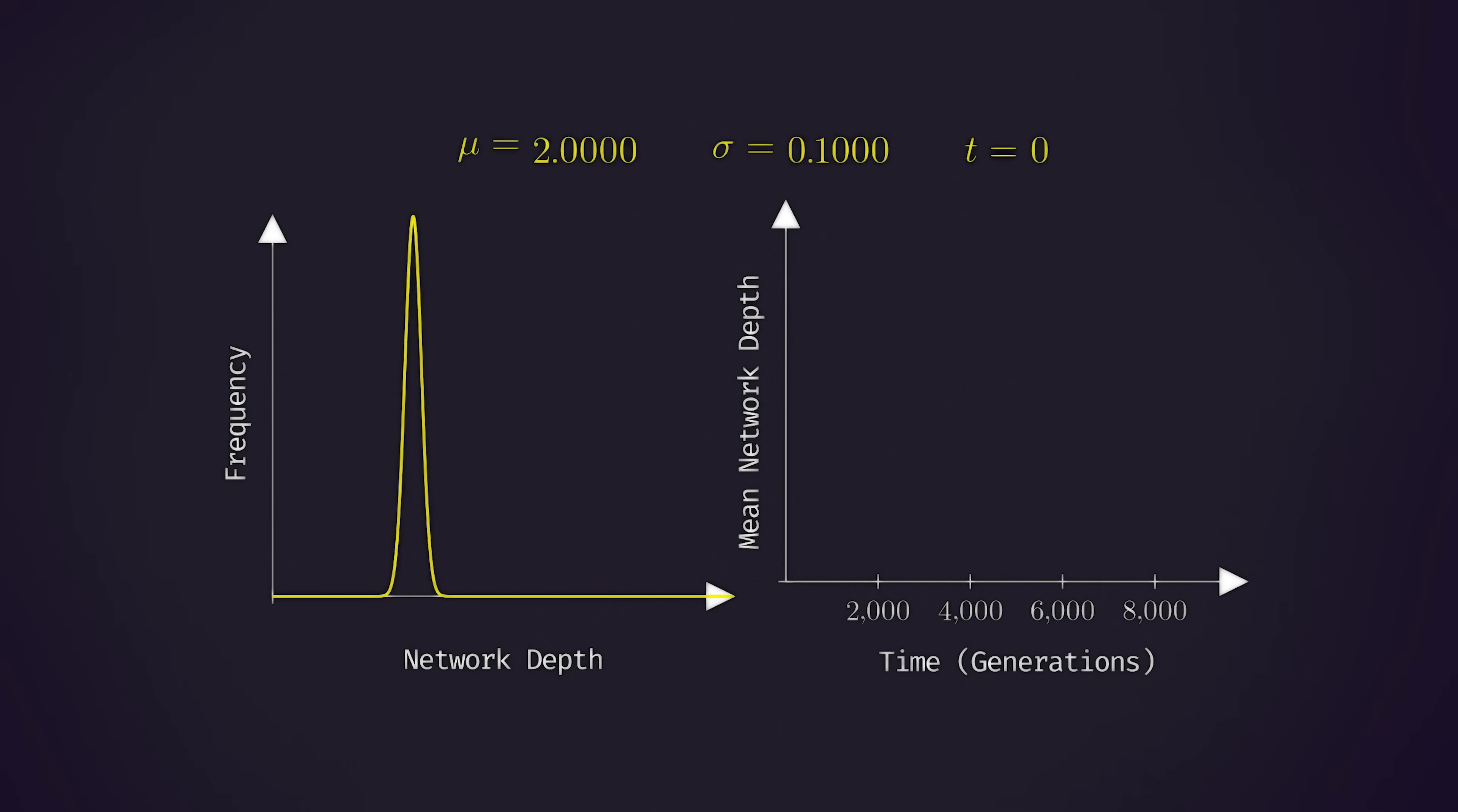Now turning to some data in the simulation itself, here we're looking at how the network depth trait changes over time. On the left, we have the distribution of the trait represented again as a normal distribution. On the right, we're seeing how the mean changes over time. As we can see, throughout the simulation, the neural network control of the protozoa tends to increase.